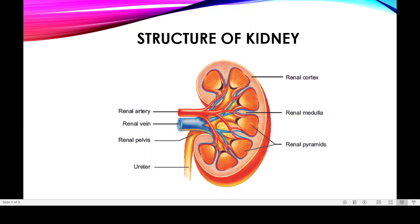Now, what is the structure of the kidney? Kidneys are dark red, bean-shaped organs. Each kidney is 10 cm long, 5 cm wide, and 4 cm thick, and weighs about 120 grams. They are located in the back wall of the abdominal cavity, just below the diaphragm.